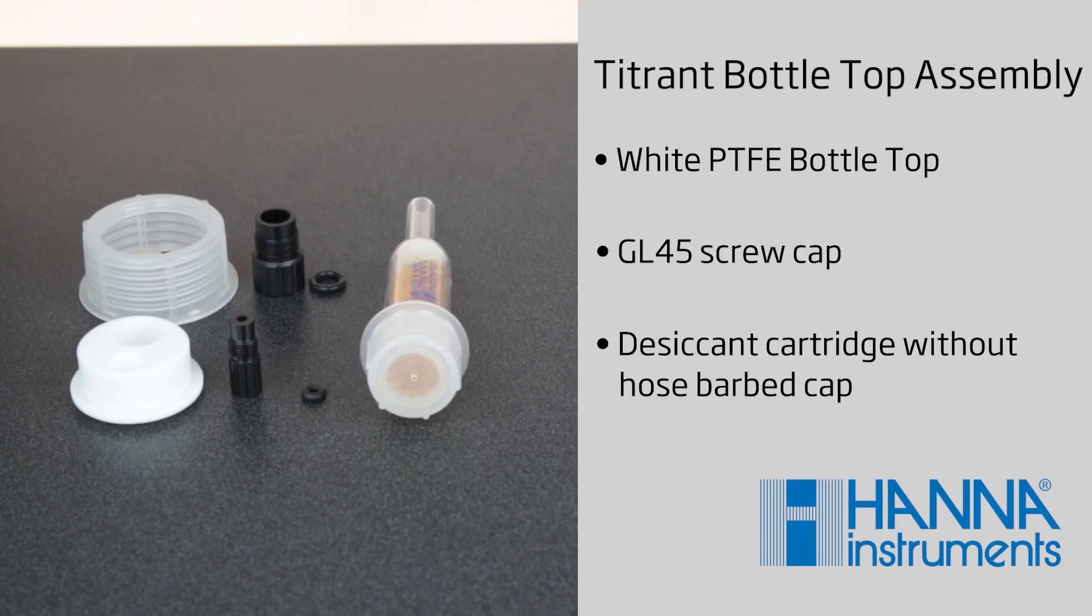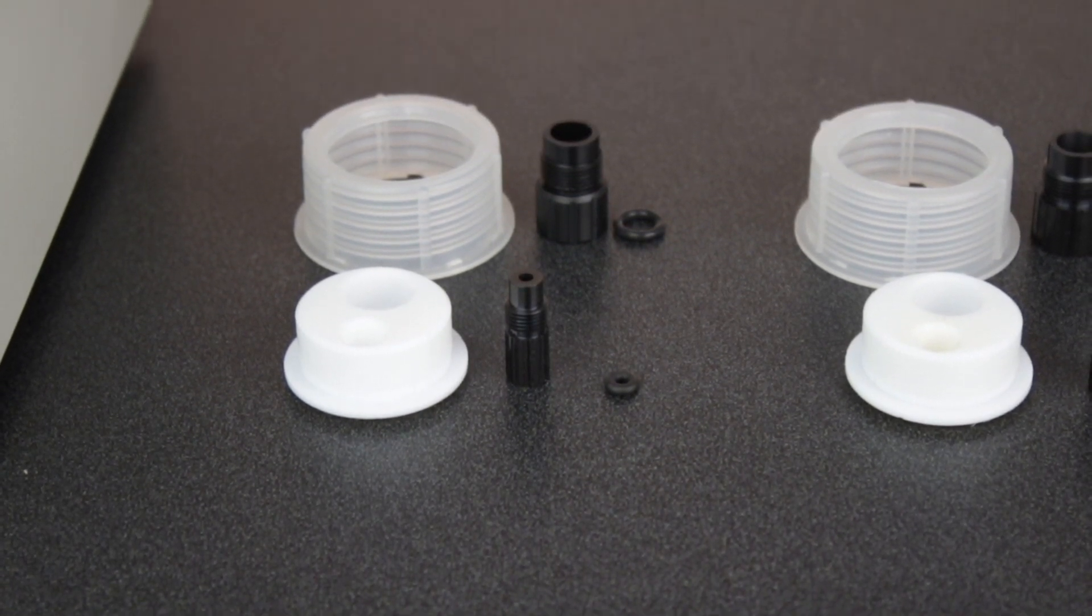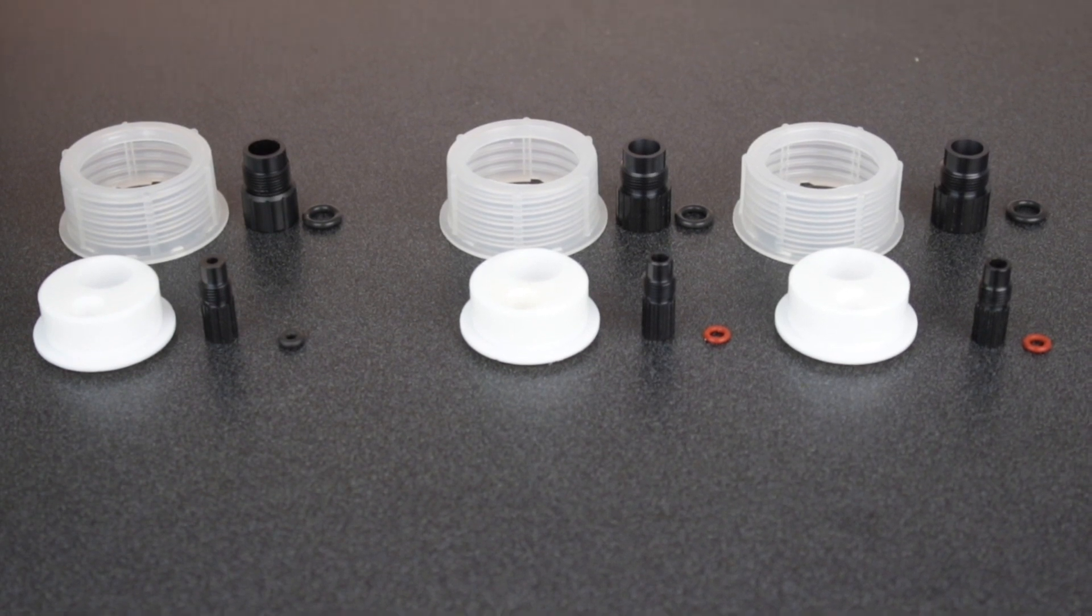For the titrant bottle, we'll need a white PTFE bottle top, a GL45 bottle screw cap, and a desiccant cartridge without hose barbed cap. Notice each of the bottle tops has two ports on top. The bottle top for the titrant bottle has a slightly smaller 3 mm port. You can recognize this by inspecting the color of the O-ring.